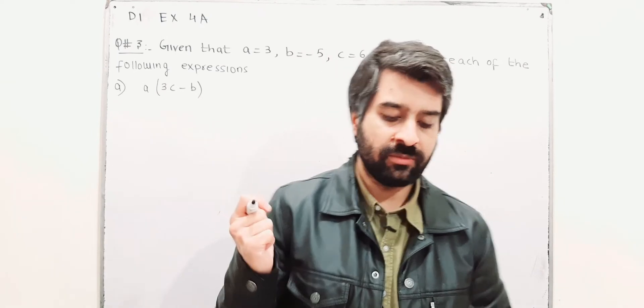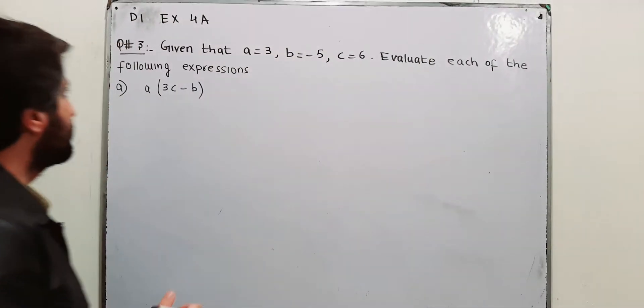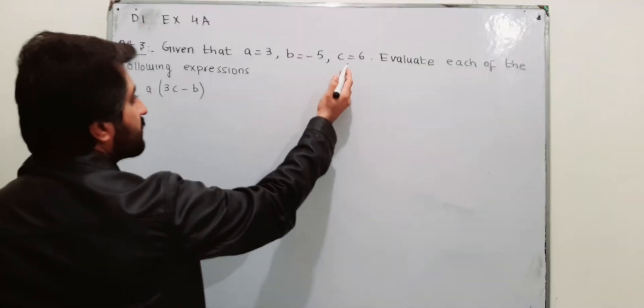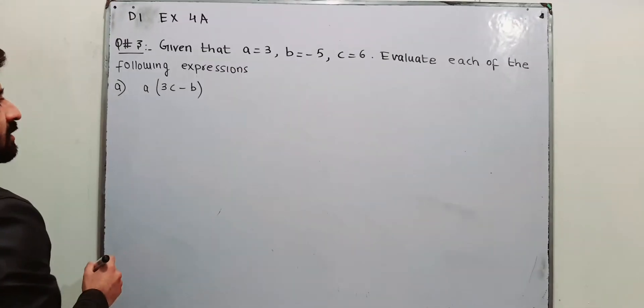Starting from question number 3, it says given that A is 3, B is minus 5 and the value of C is 6. Evaluate each of the following expressions.